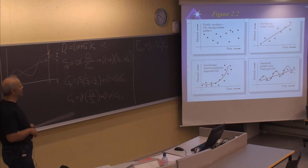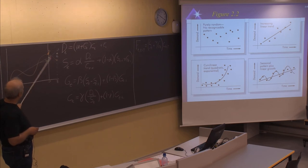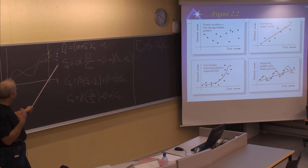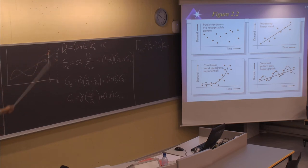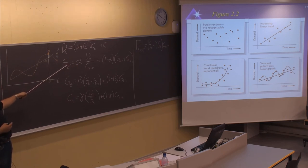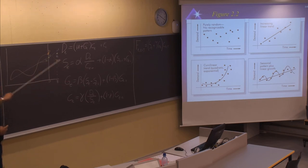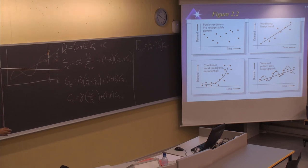We use different formulas for updating the method when we get new data points. We get a new measured value, we compare that to what we have forecasted, and forecasting will consider both the trend and the season. When we get a new data point, we will have to update the value of the series, which is the endpoint of the line, and the gradient — how much we expect to increase from one period to another.